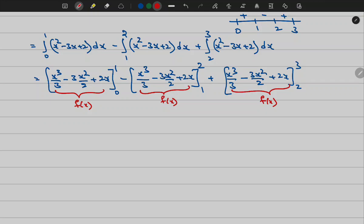Now let me substitute upper limit minus lower limit, then f of 1 minus f of 0, minus of f of 2 minus f of 1, plus f of 3 minus f of 2.